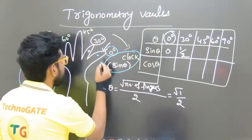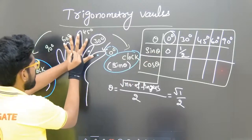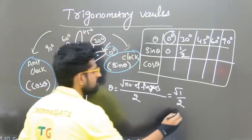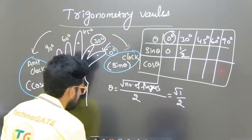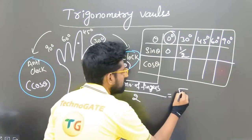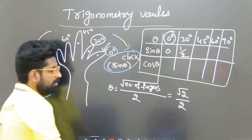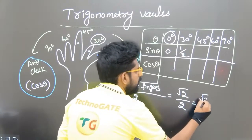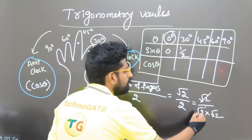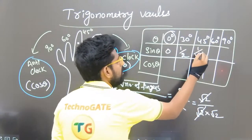For 45 degrees, my pointer is here. There are two fingers in the clockwise direction, so the formula gives root 2 by 2. Now, 2 can be written as root 2 into root 2; one root 2 cancels, giving us 1 by root 2. Hence sin 45° = 1/√2.